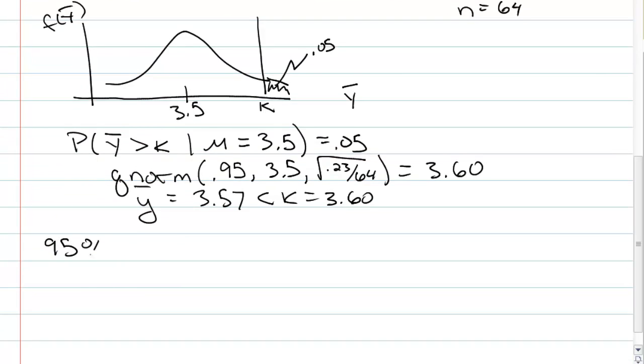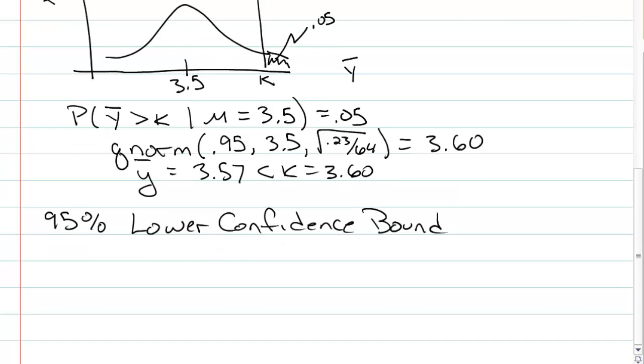Another way we did this is we looked at a 95% lower confidence bound. For us, we calculated that using qnorm again. qnorm 0.05, this time we're centered on our sample mean 3.57. And we have the same standard deviation, 0.23 over square root of 64.